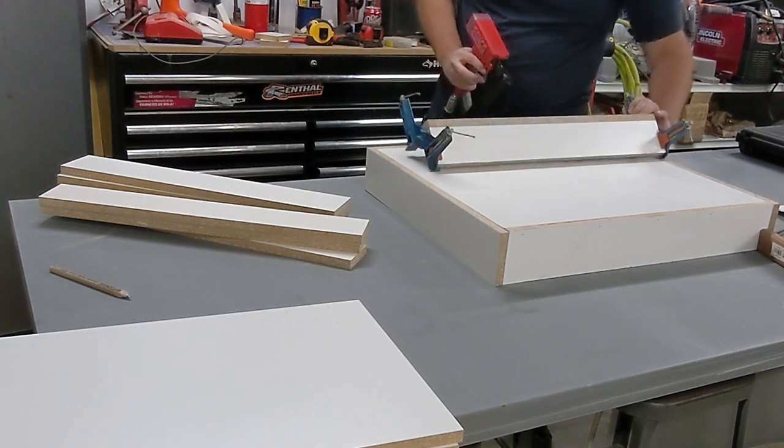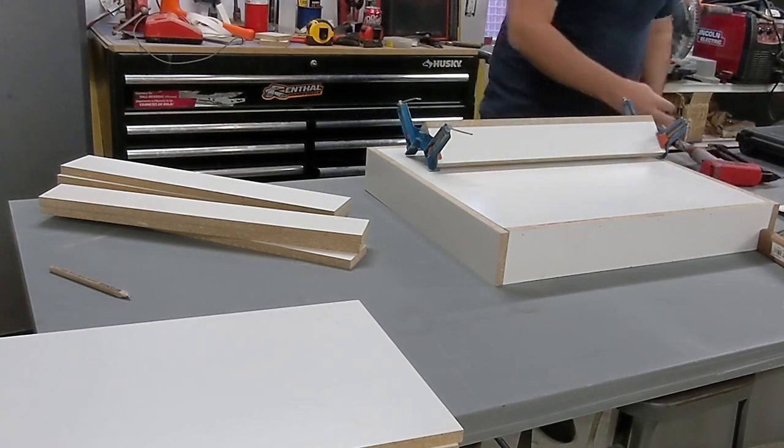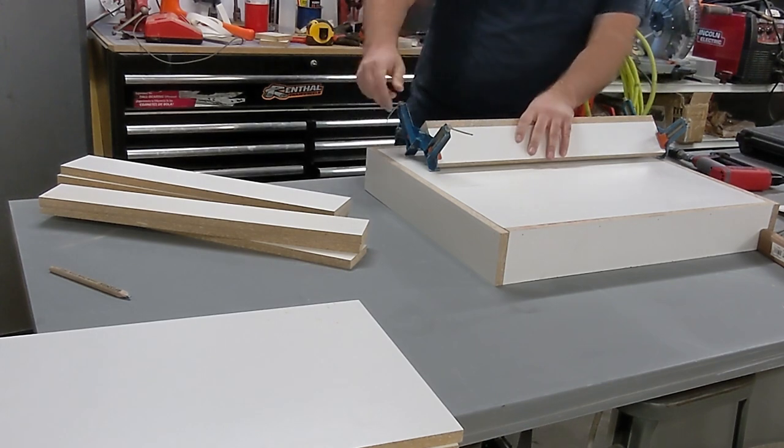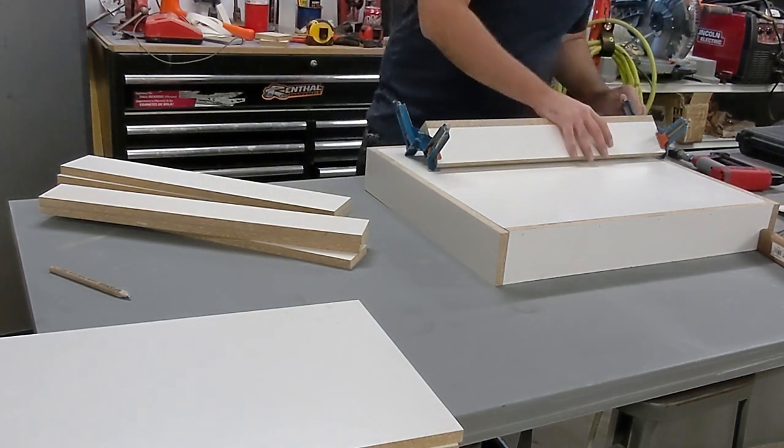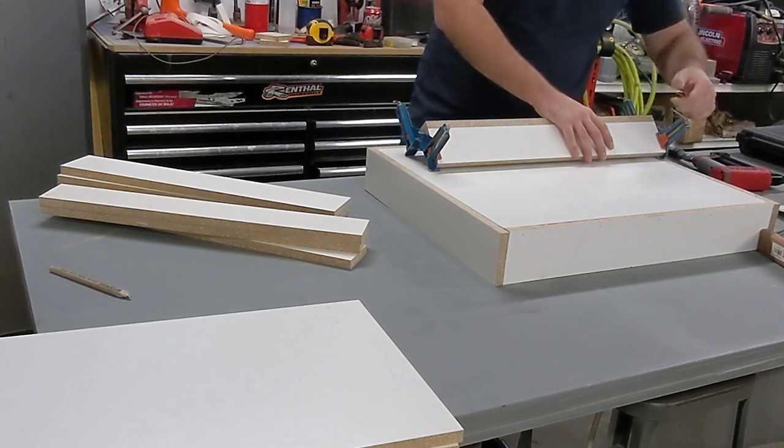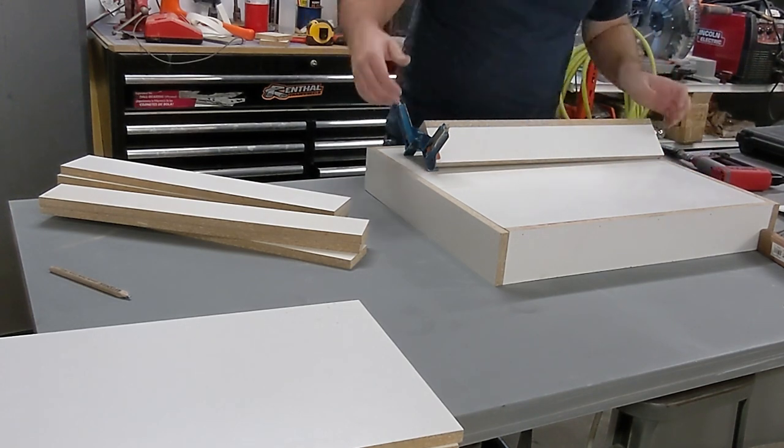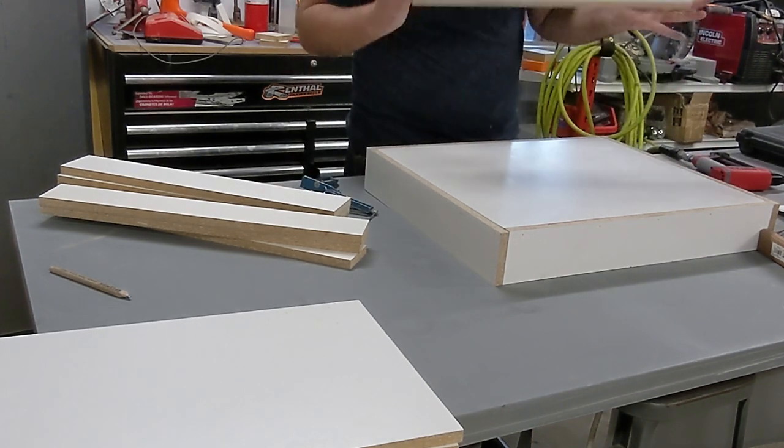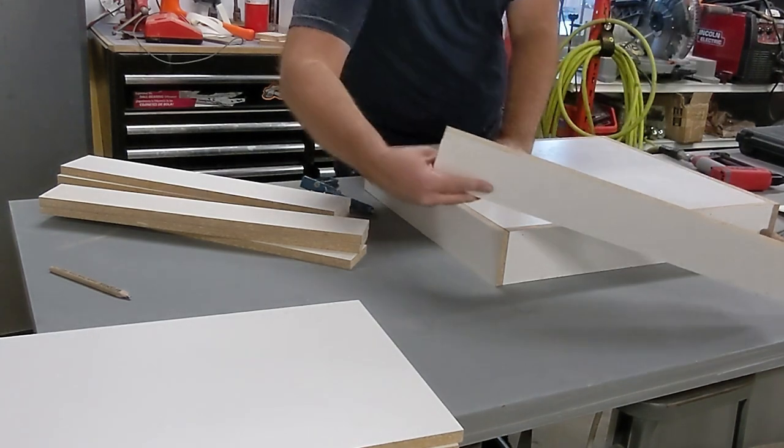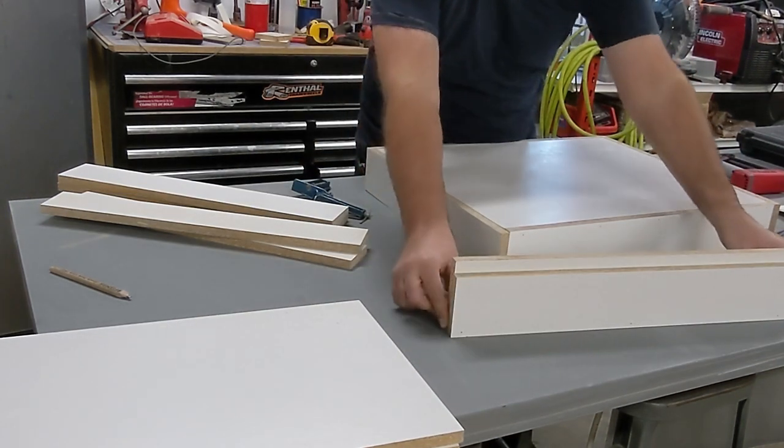I followed up by making these legs strong by turning them into little L shapes that will mount to the corners of the boxes, so that way it won't want to rock back and forth. It'll have the strength it needs for kids while it's pushing up against it. So I made all four of them that same way.